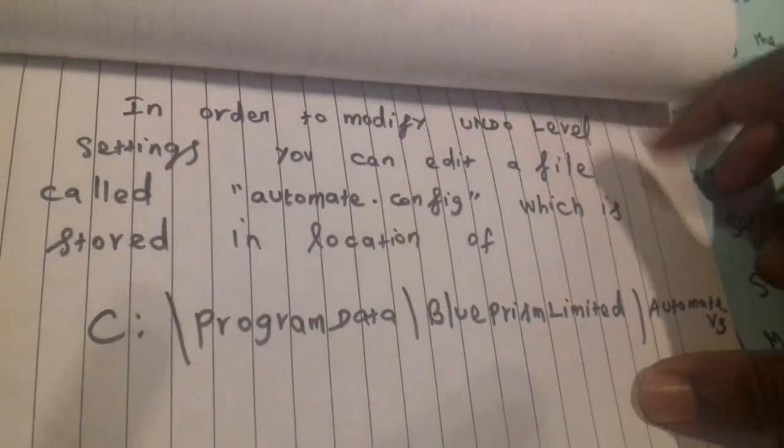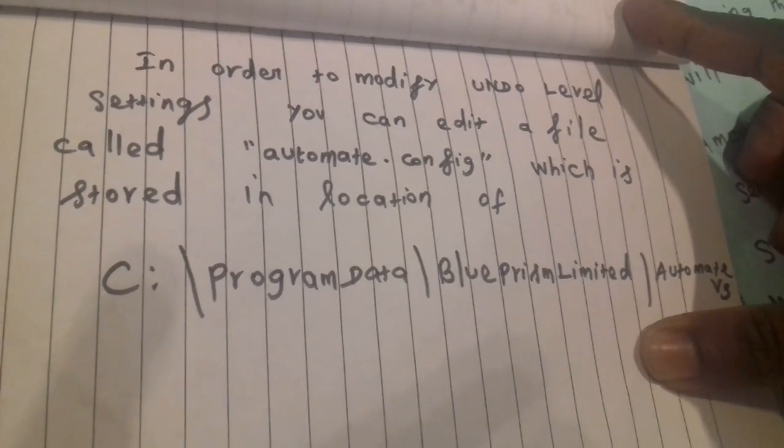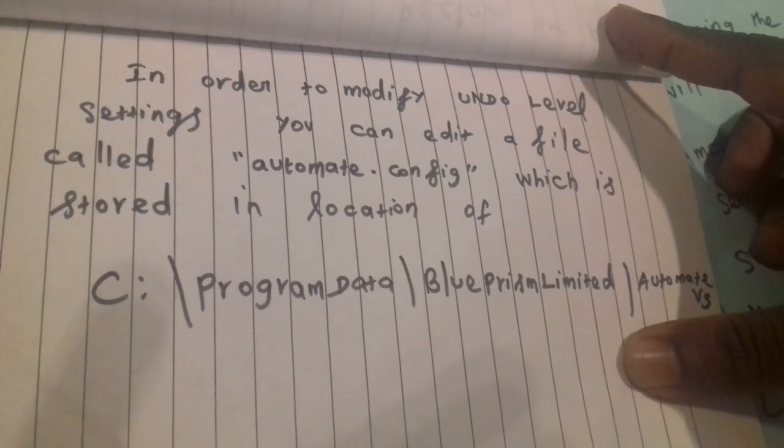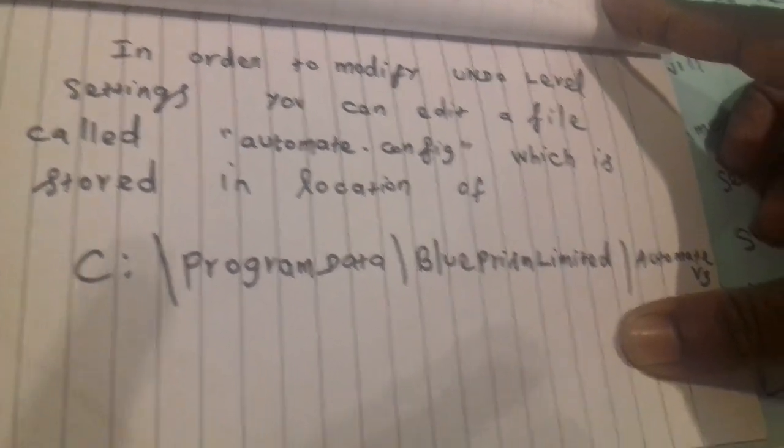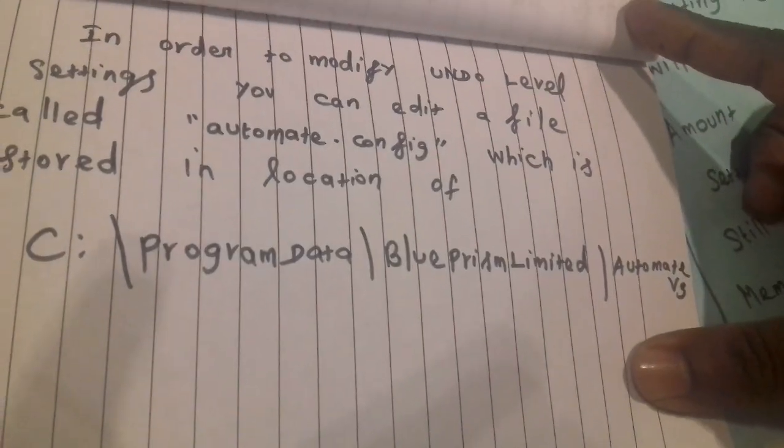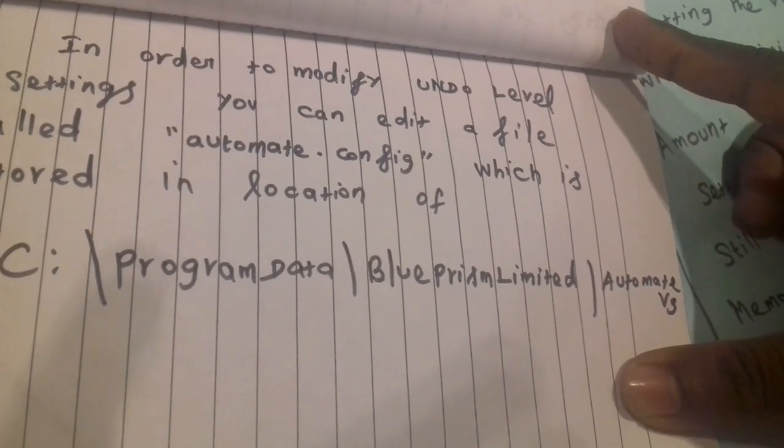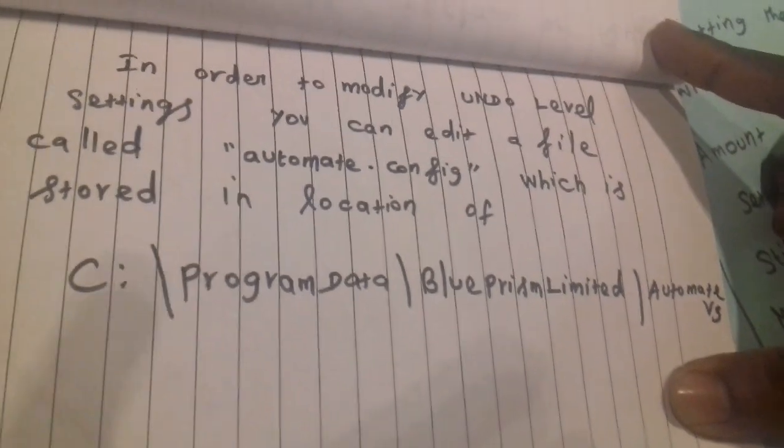You have to modify undo level settings and edit the file called Automate.config. That config file you have to see in C:\ProgramData\Blue Prism Limited\Automate V3.